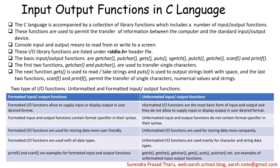Formatted input-output functions allow the user to supply input or display output in a user-defined format. For example, if you have a table with role number, name, and age — role number is an integer, name is a string, and age is a number — each has a different data type, and formatted I/O stores them according to their respective format.